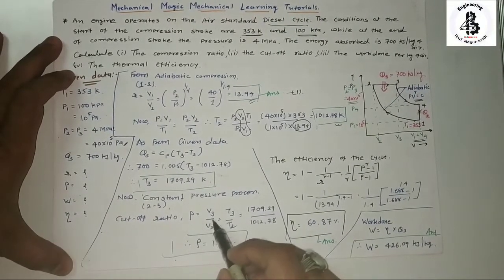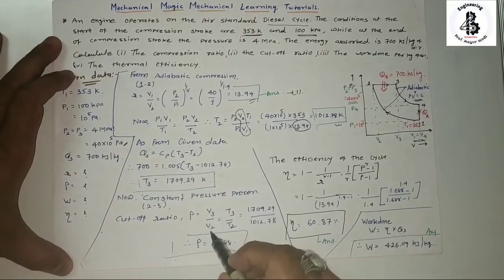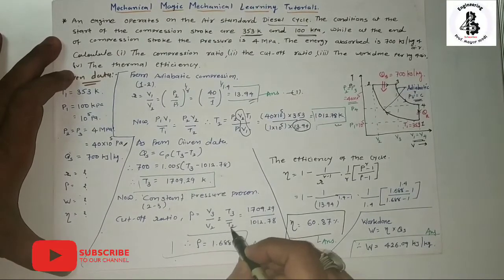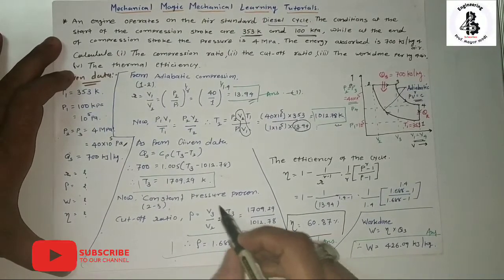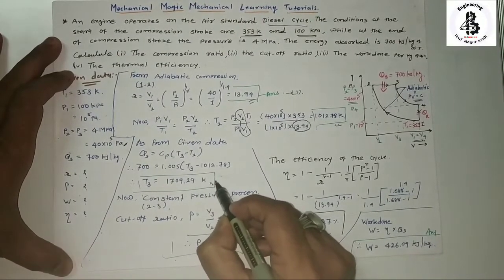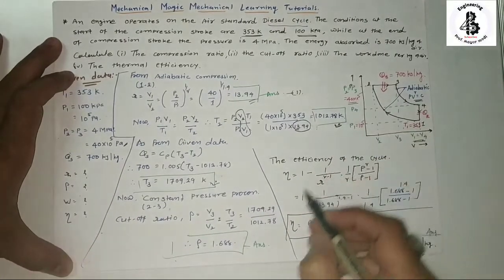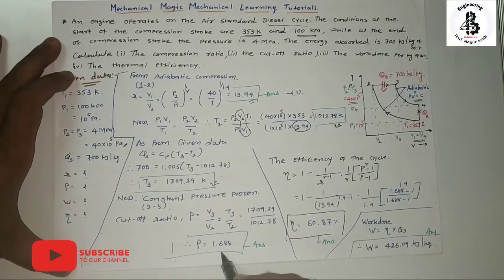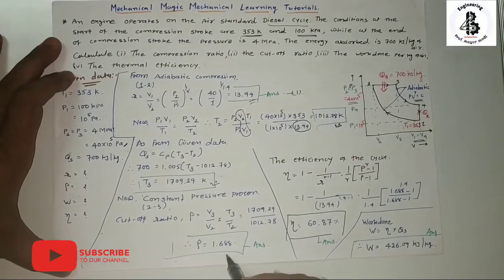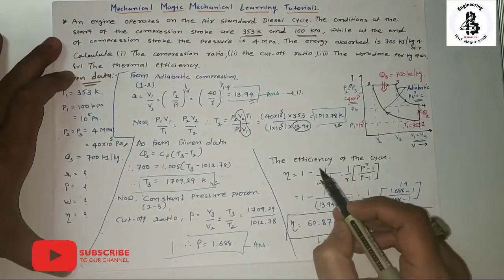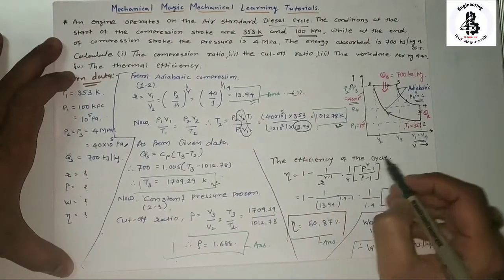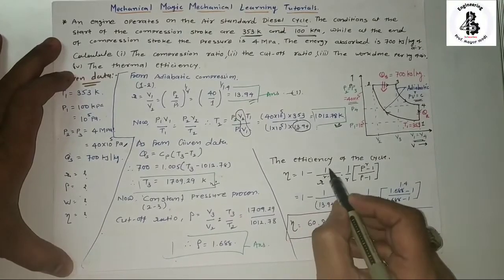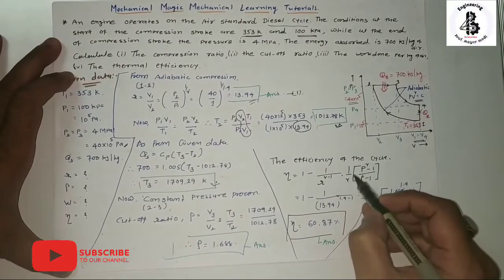From the constant pressure process 2→3, the cutoff ratio ρ = V3/V2 = T3/T2. Substituting T3 = 1709.29 K and T2 = 1012.78 K, we get the cutoff ratio ρ = 1.688.